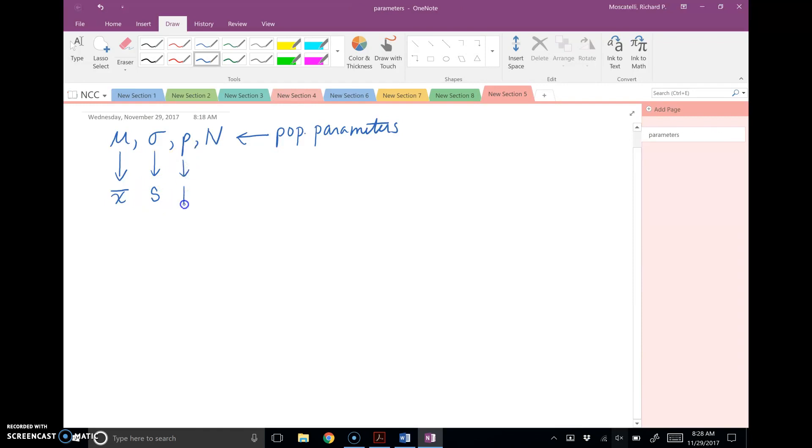For p, the population proportion, the estimator is p hat. That's called the sample proportion. And the estimator used for the population size, obviously, is the sample size, lowercase n.